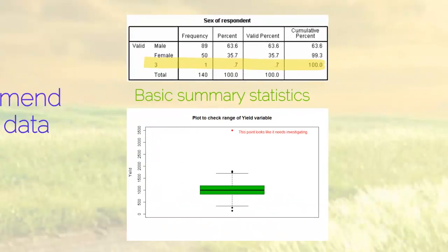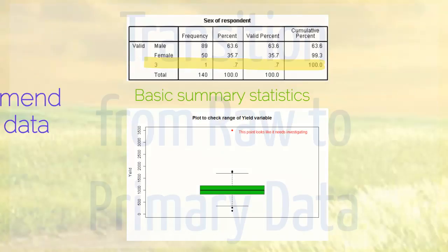Once the data has been entered you can run further checks by producing simple frequency tables, cross tabulations and summaries. For numeric variables such as yield, examining statistics such as the minimum and maximum and plotting the data can be a very useful method of identifying incorrect values or outliers.